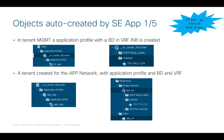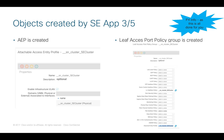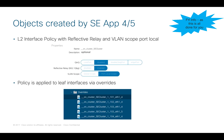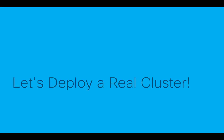Once you answer those questions, the application takes over and automatically configures all the objects, their attributes, and their relationships for you. It creates application profiles, bridge domains, physical domains, VLAN pools, the AEP, policy groups, physical port panel configuration, and everything needed to make it work — you don't have to do anything, the app does it all. It then binds everything together and the cluster nodes start configuring themselves and joining the network. In the next video, I'll show you all of this on my own lab with a real Service Engine cluster, so stay tuned.